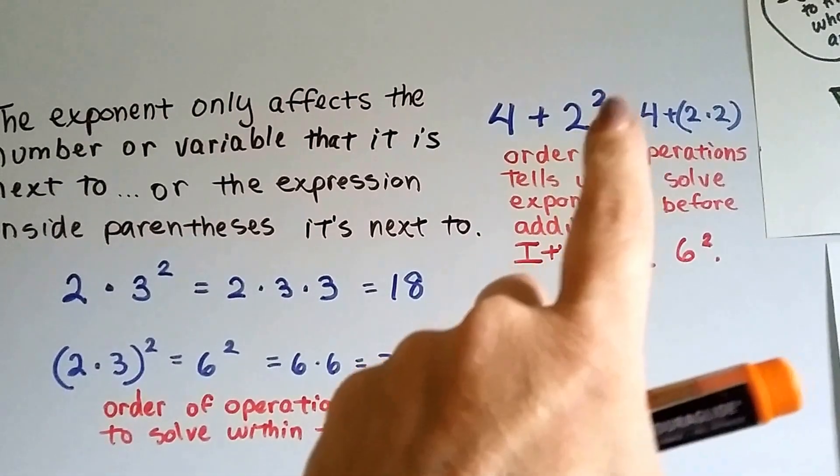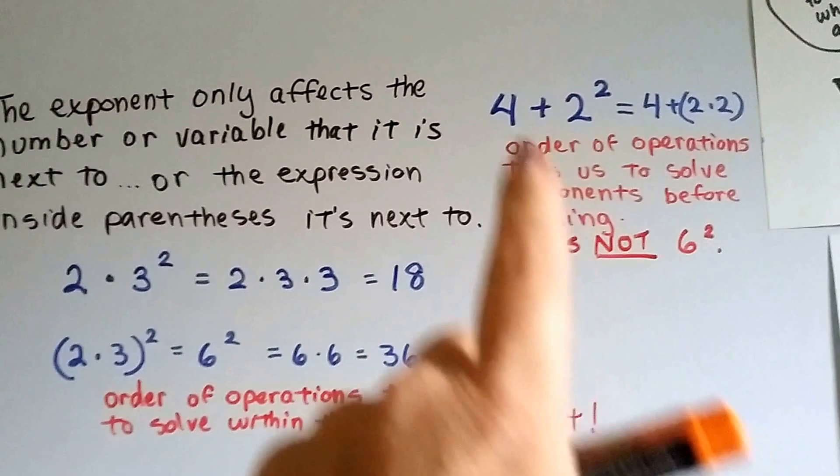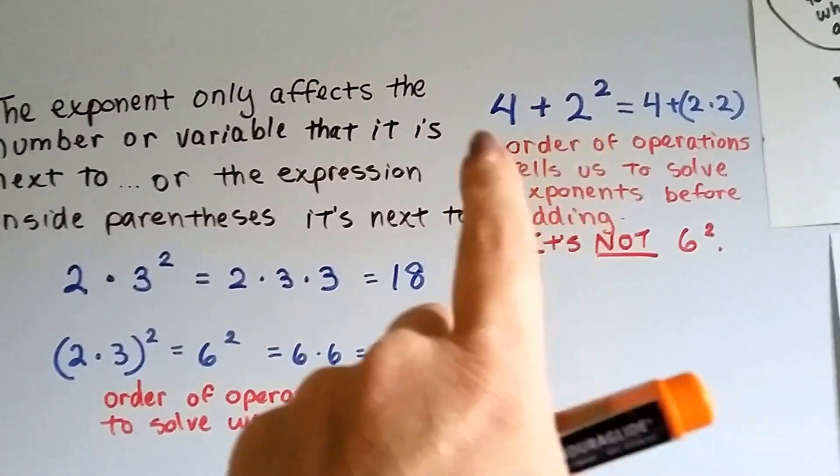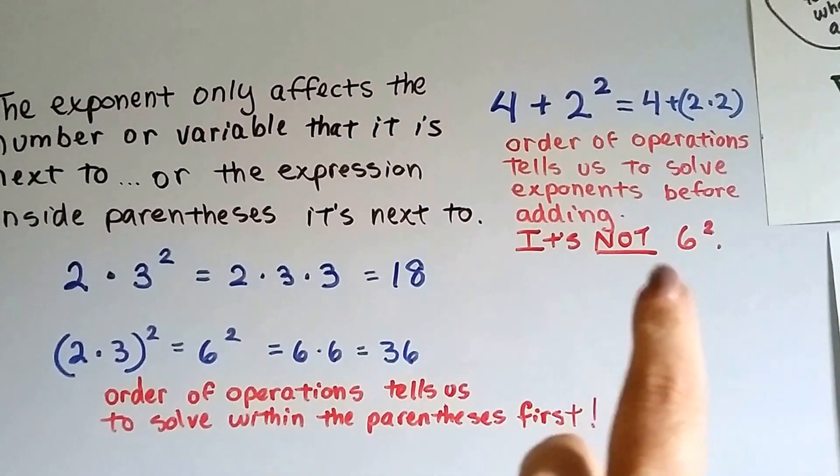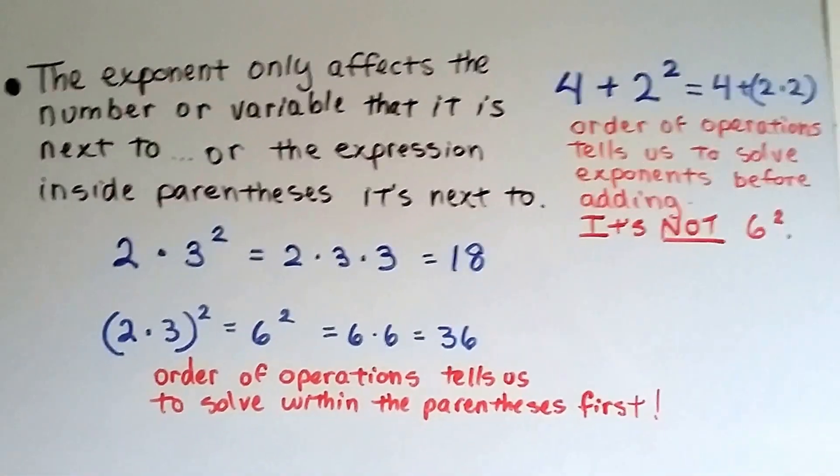So we'd have to do the exponents first, 2 times 2, and then add the 4. So it's not 4 plus 2, which is 6 to the second power. No, no, no. Order of operations says we have to do the exponents first, don't we?